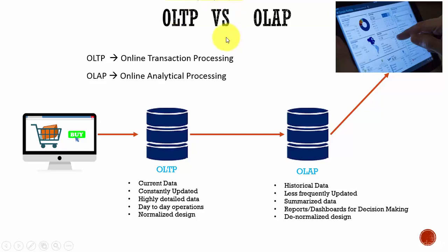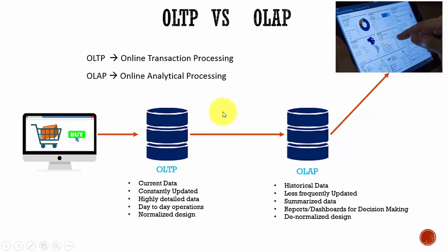In this session, let's learn about OLTP versus OLAP. OLTP refers to Online Transaction Processing and OLAP refers to Online Analytical Processing. Whenever you configure a database, the first question you need to ask is whether you are configuring it for an OLTP purpose or an OLAP purpose. We will understand what an OLTP database means and what an OLAP database means.